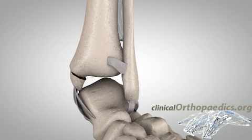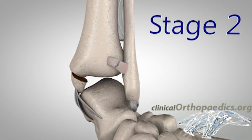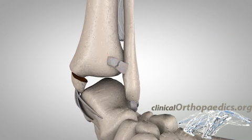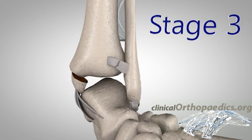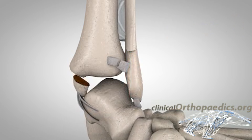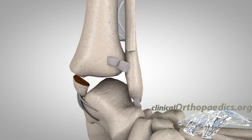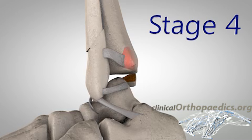This is followed by disruption of the anterior syndesmosis or avulsion of its bony insertion. Continued rotation causes fracturing of the fibula at or above the syndesmosis, and finally a rupture of the posterior syndesmosis or a fracture of the posterior tubercle of the tibia.